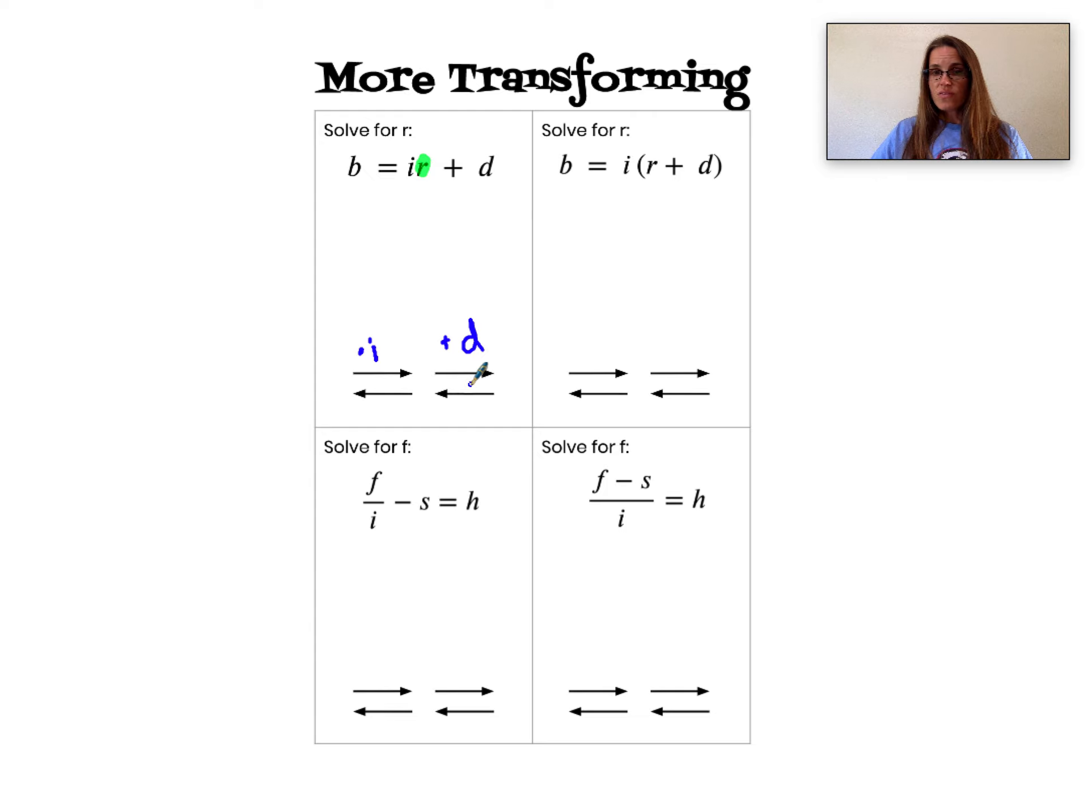In order to solve I will perform my inverse operations in reverse order. First subtracting d and then dividing by i. So in my equation, r times i plus d, in reverse order: minus d, divided by i.